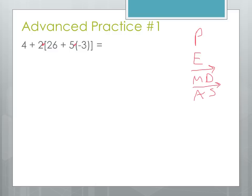First is parentheses. We always want to work from the inside out. There's nothing to do in this innermost set of parentheses, so the parentheses that we're going to be working in first is this one right here. So what's the first operation? Do we add first or do we multiply first? Well, we follow the order of operations again, and it tells us that this multiplication step is going to come first. So the first thing that we're going to do is positive 5 times negative 3. When we do that, positive 5 times negative 3, signs are different, we get a negative 15. So this is now a subtraction problem.